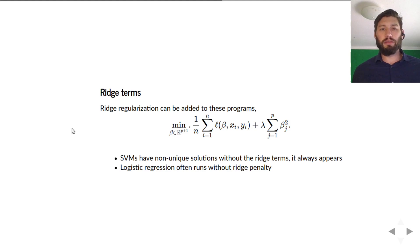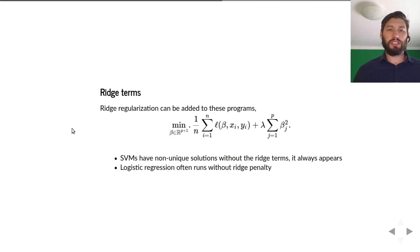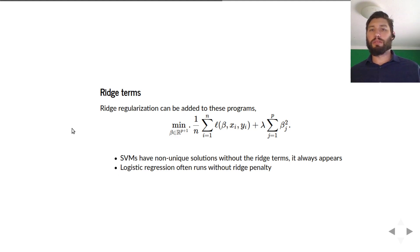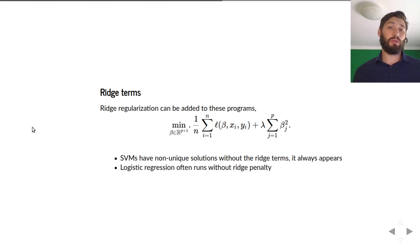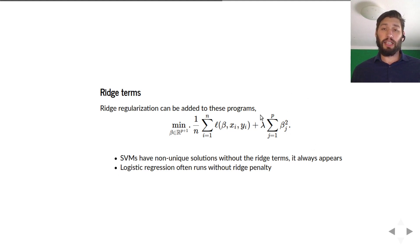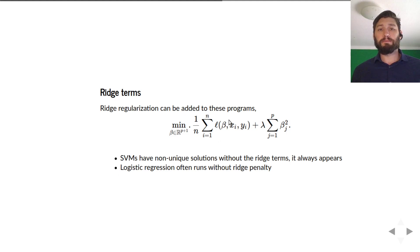Before going into that, I'd like to talk about ridge terms and ridge regularization. Ridge regularization can be added to the programs that I've already mentioned, just like we added it to the least squares objective. You just add lambda times the sum of the squares of the betas to the empirical risk.